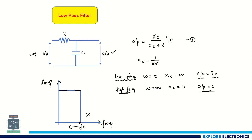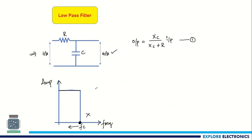By looking at this, we can say all the low frequencies are going to be passed from the low-pass filter and high-frequency signals are going to be rejected. The cutoff frequency up to which signals are passed depends on Fc, which equals 1 divided by 2π times RC. So it depends on the values of R and C we choose — by changing those, the cutoff frequency can be set. This is the ideal frequency response.